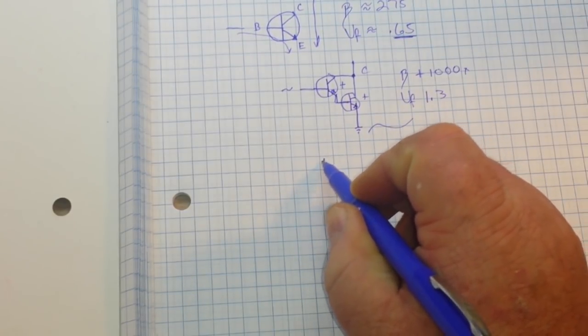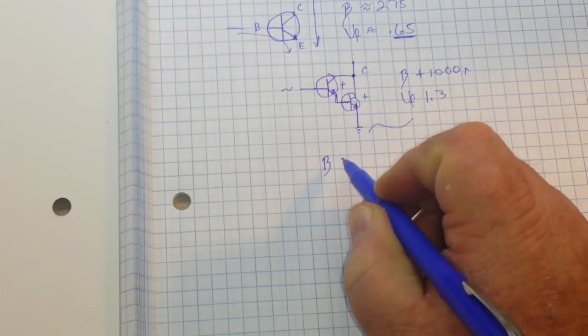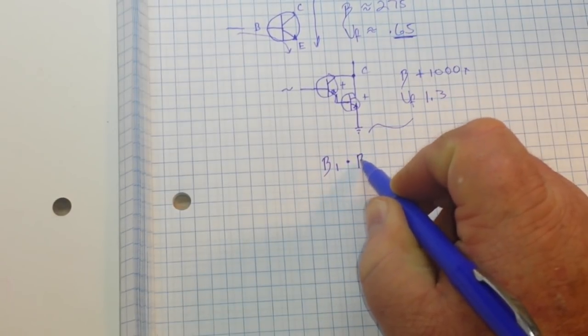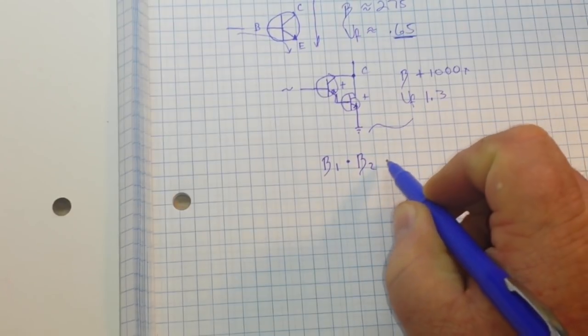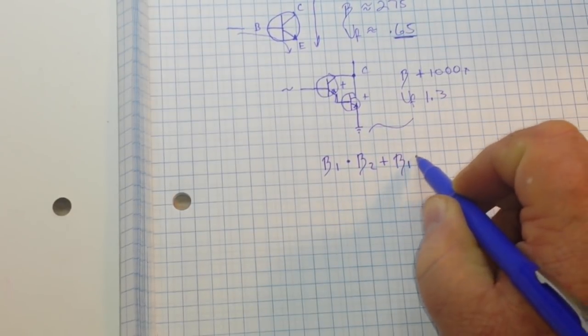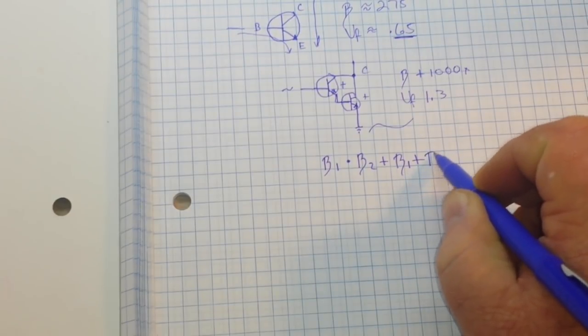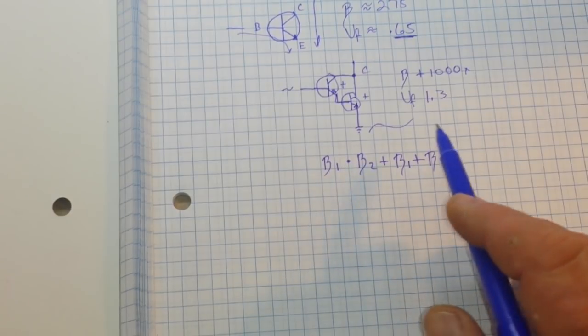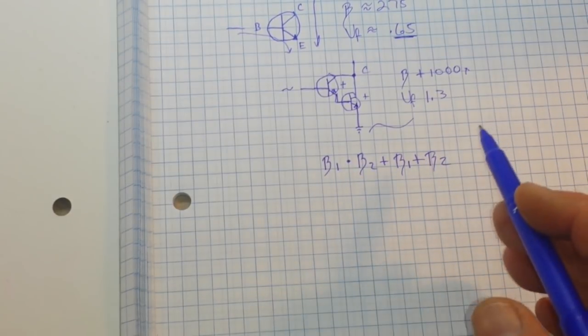To calculate our gain, it's going to be the gain of transistor 1 times the gain of transistor 2, plus the gain of transistor 1, plus the gain of transistor 2. You can see we have the product plus the sums, and that is what allows us to get such an incredible gain.